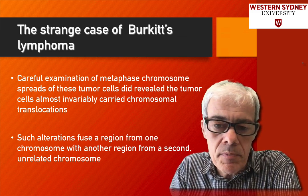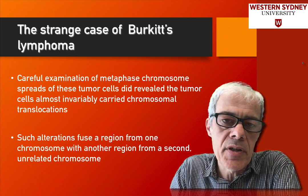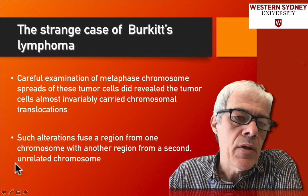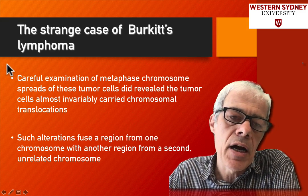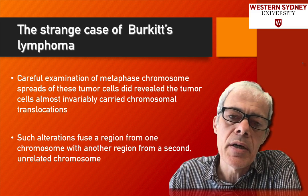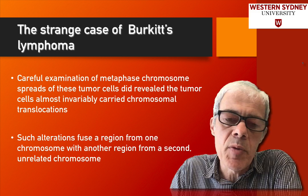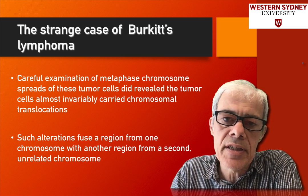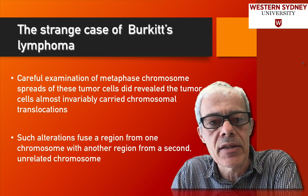So there's another good example from this recommended reading book, Weinberg's Biology of Cancer, where they talk about the strange case of Burkitt's lymphoma. This is a good example because you can clearly understand, once you look at this example, how they found the gene that was involved in cancer.